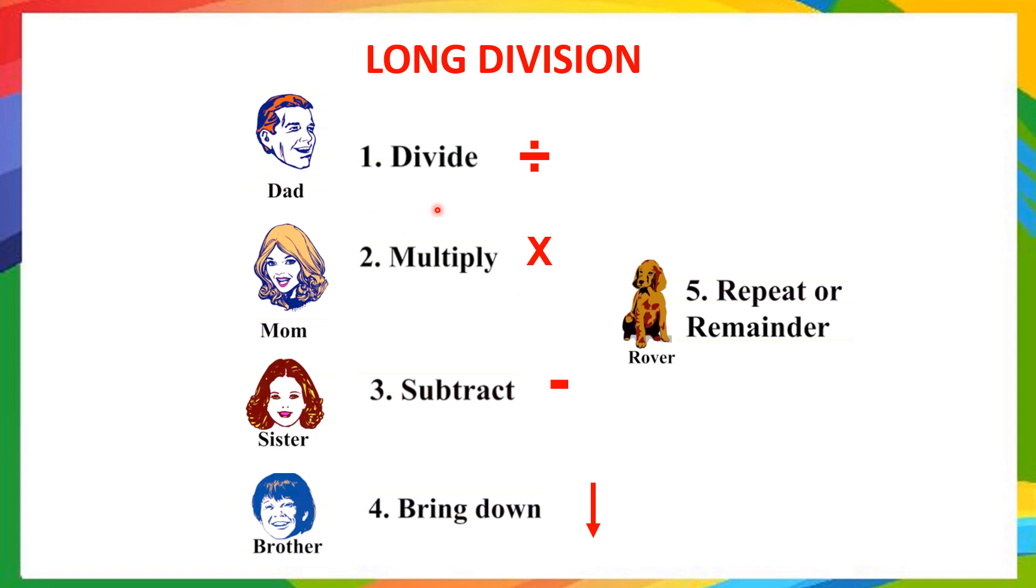So, we will follow these steps. Divide, multiply, subtract, bring it down and repeat. Or remainder. Again, you can remember dad, mom, sister, brother and rover.